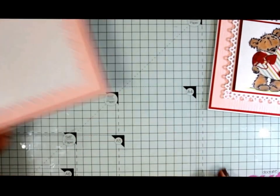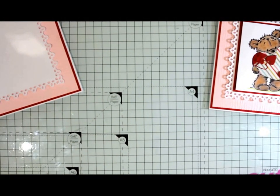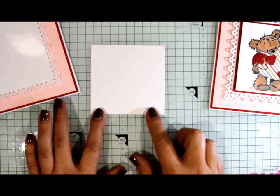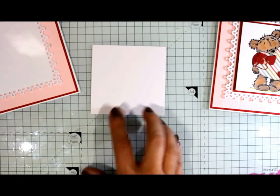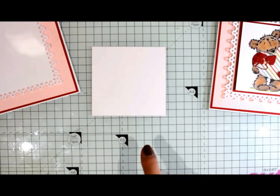Next we can put that to one side. We're going to work on our stamped image now. So I've got a small piece of white cardstock that I've cut down to nine centimeters by nine centimeters.